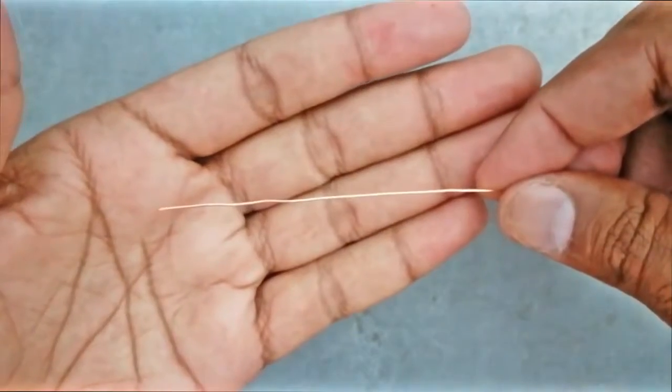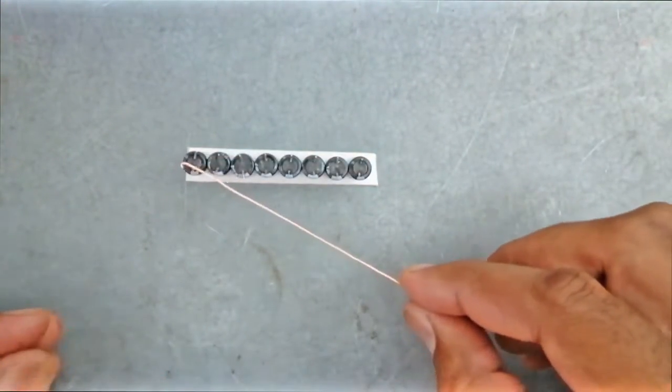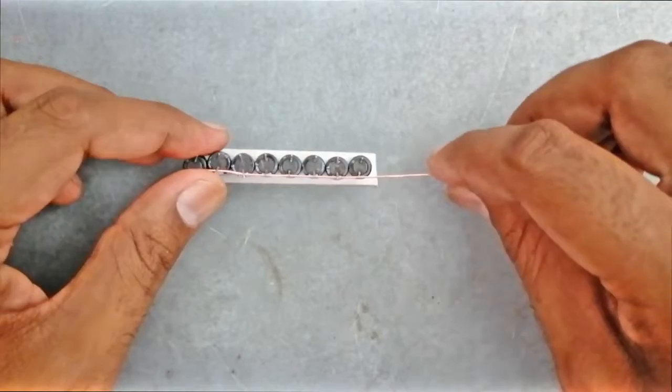This is a wire. We will connect all the negative terminals of the capacitor with the wire. Let's solder it.